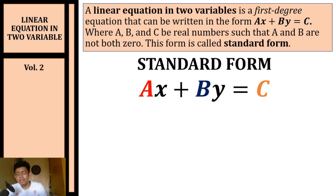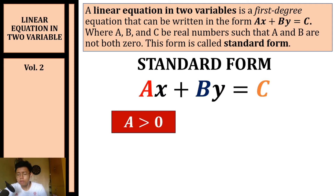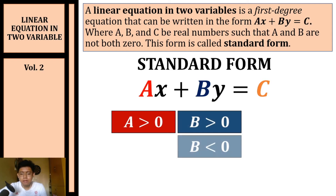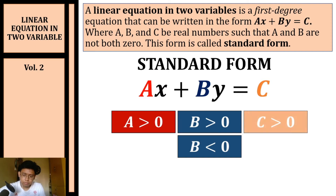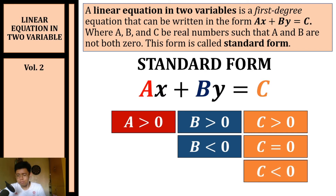In standard form ax plus by equals c, a is the numerical coefficient of x, b is the numerical coefficient of y, and c is the constant term. Here are some guidelines: the numerical coefficient of x, which is a, should always be positive; b can be either positive or negative; and c can be any real number.